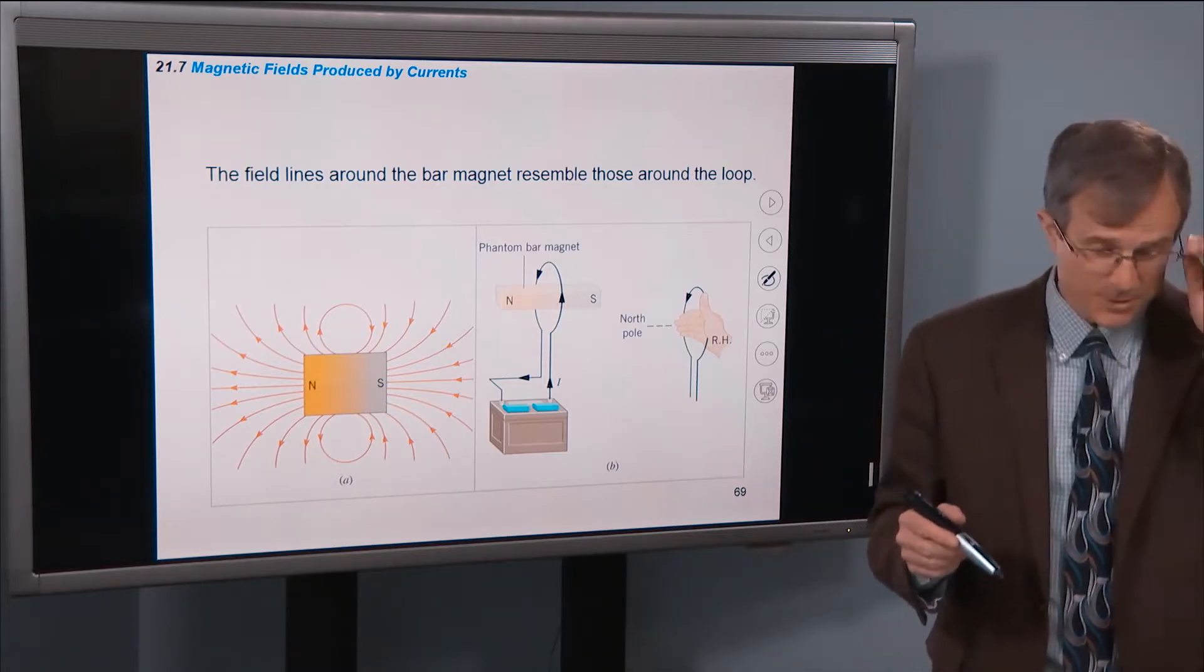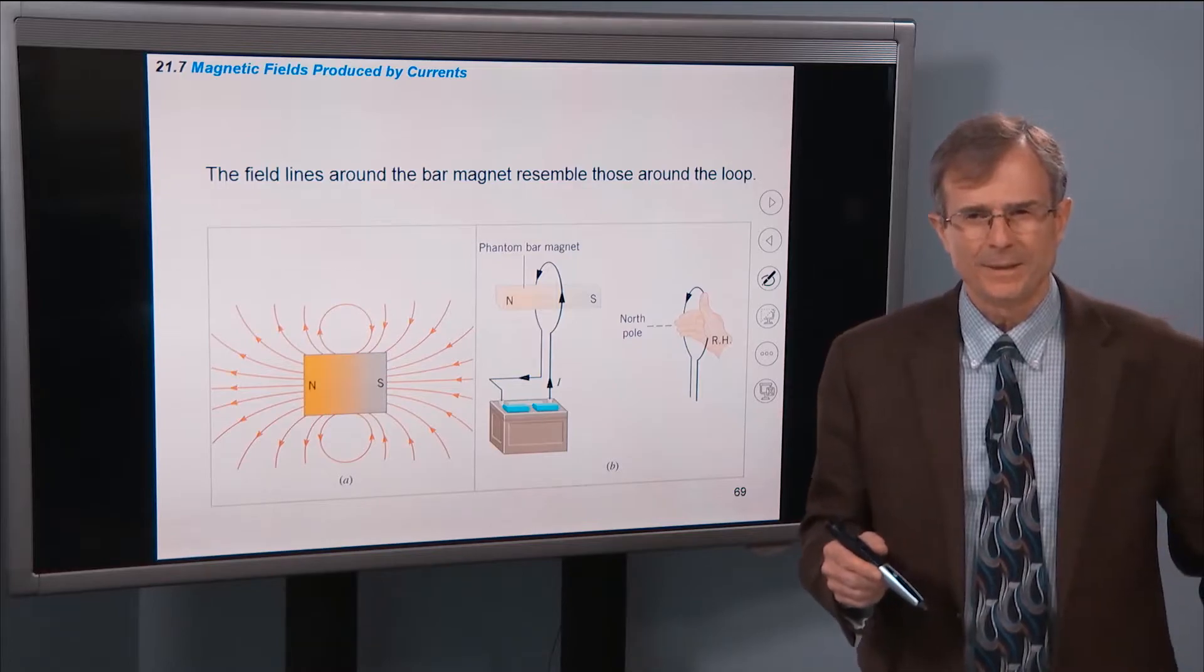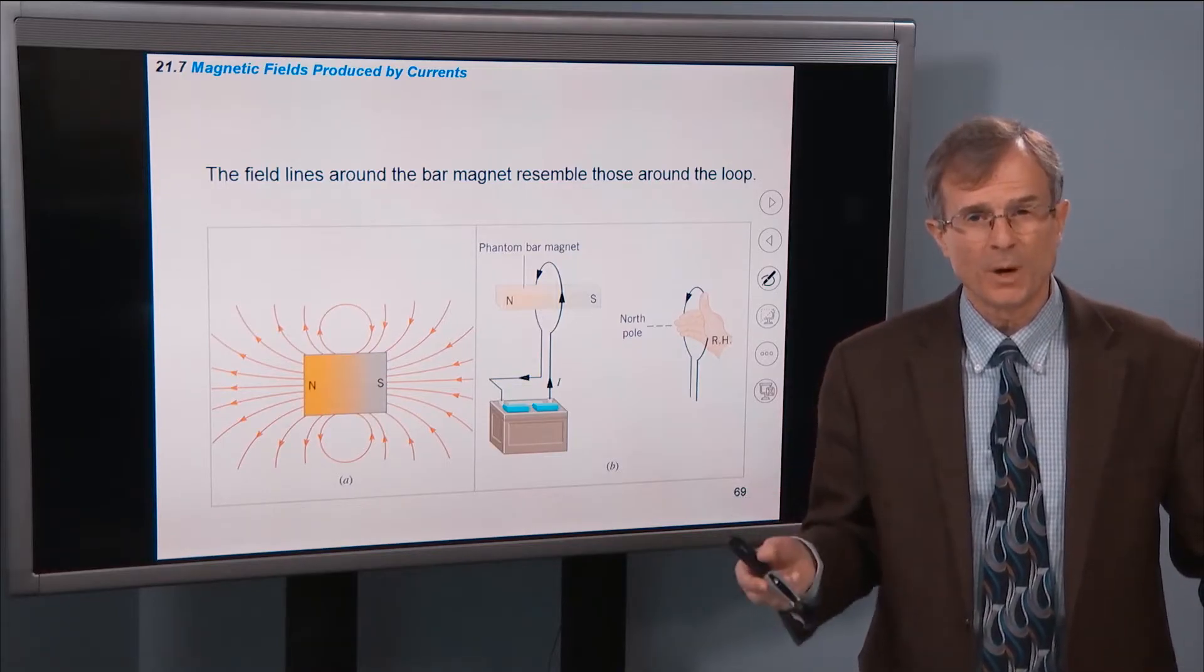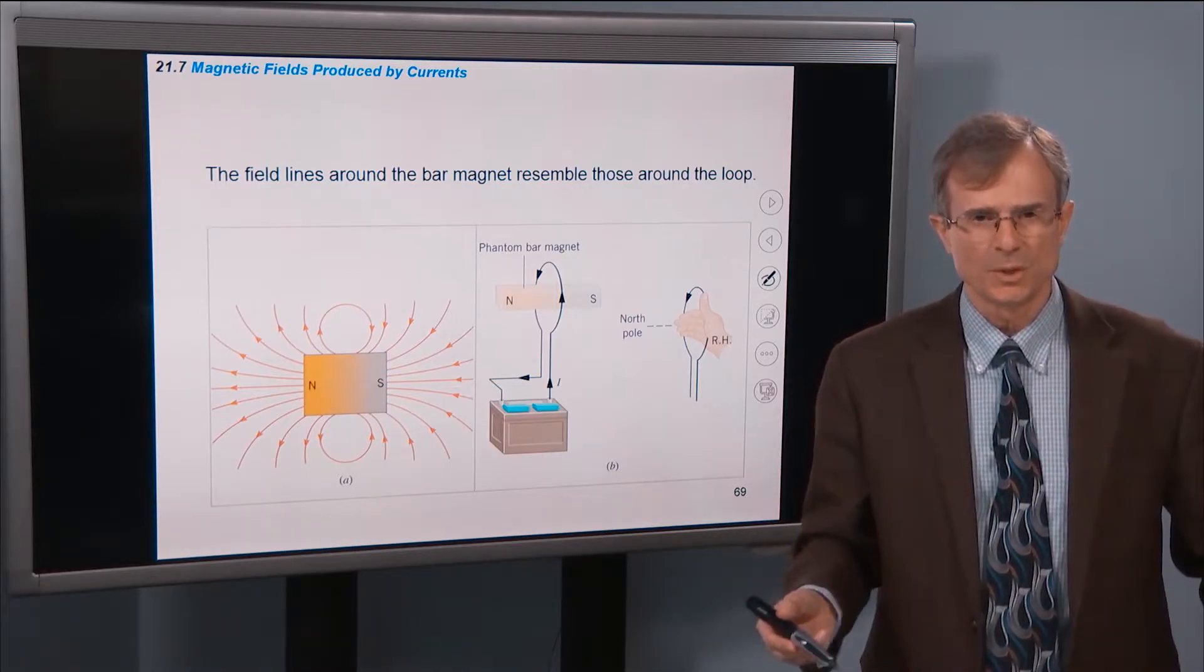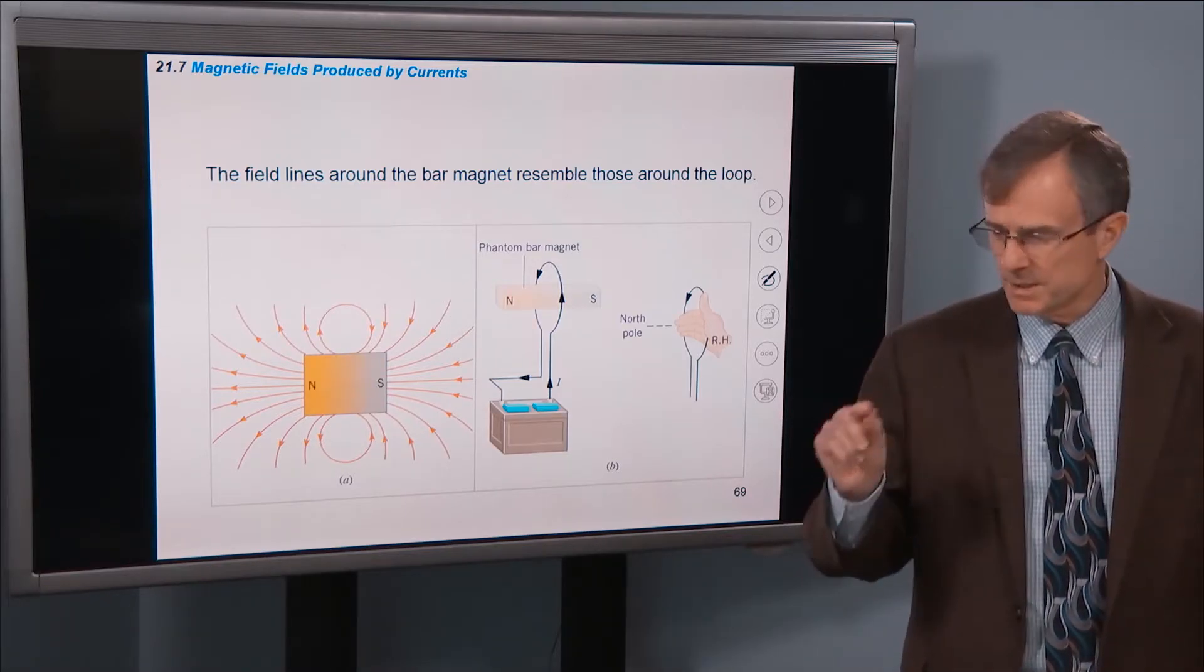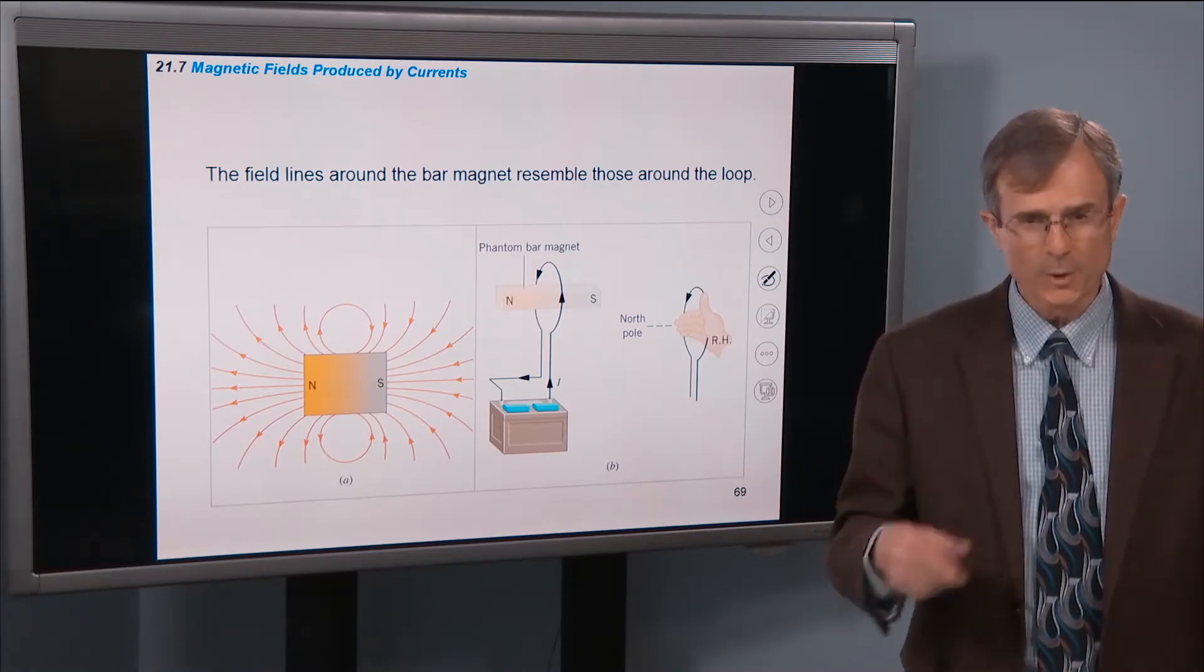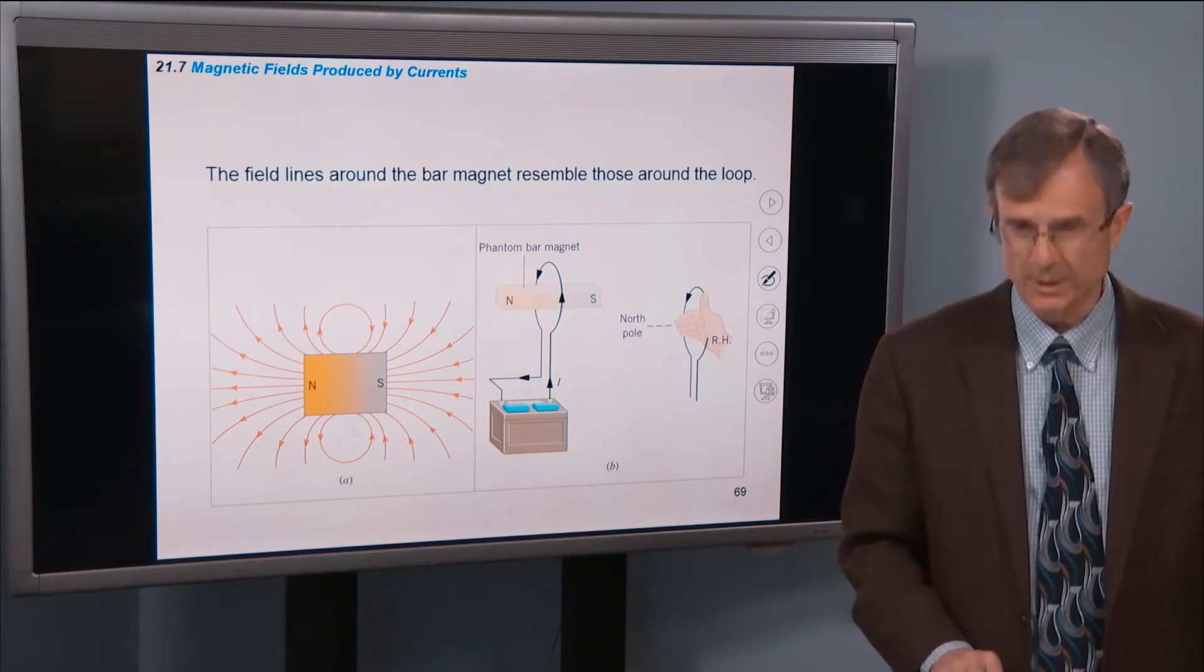And in fact the hint is suggestive and true that the magnetic field of a bar magnet is due to the motion of charges, but not any external current. It's the motion of electrons and their spin around their orbital motion and their spin motion around the atoms.